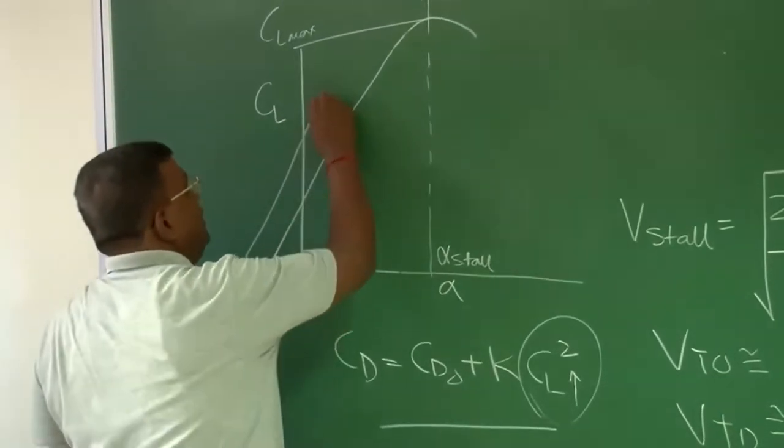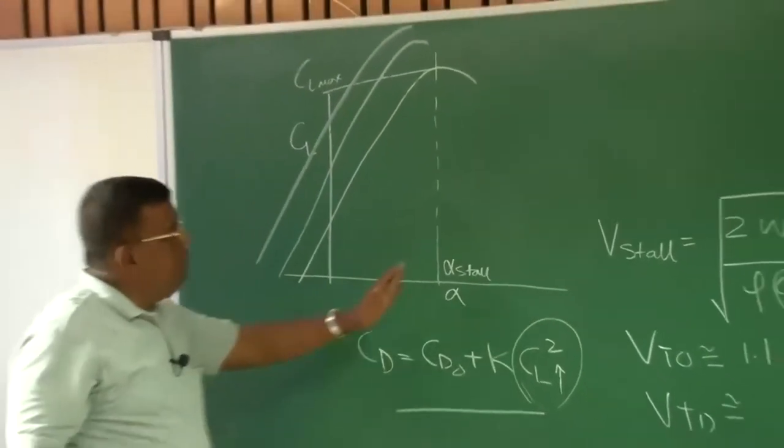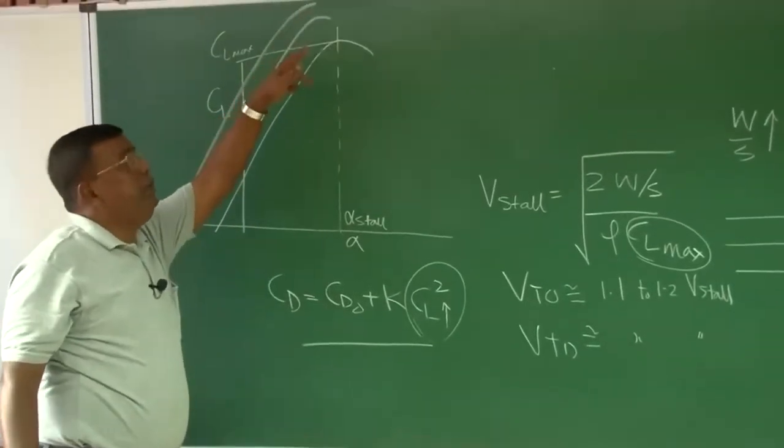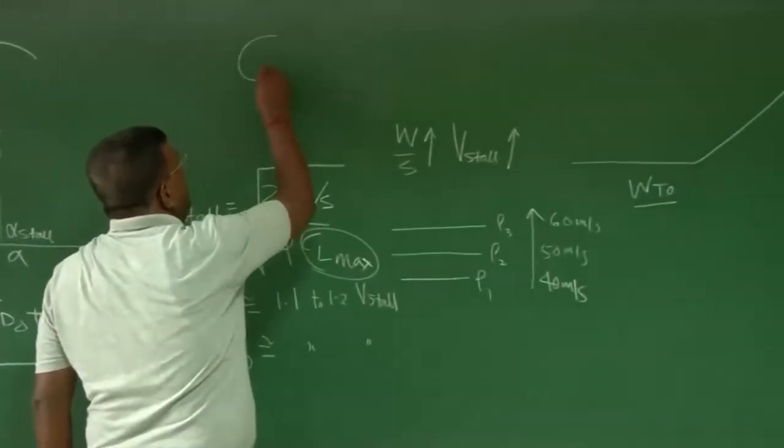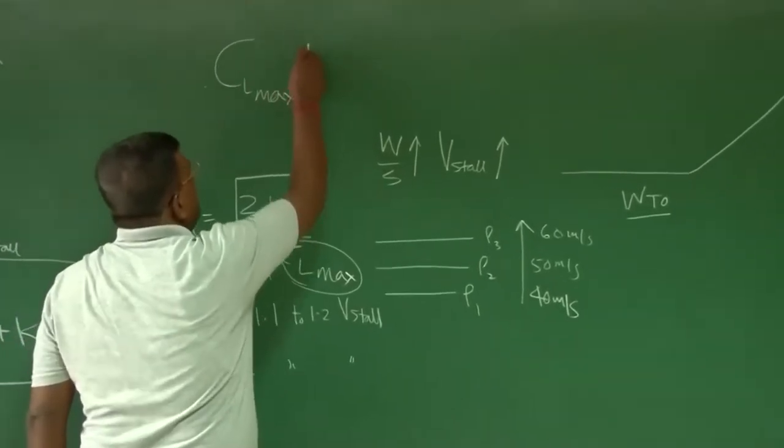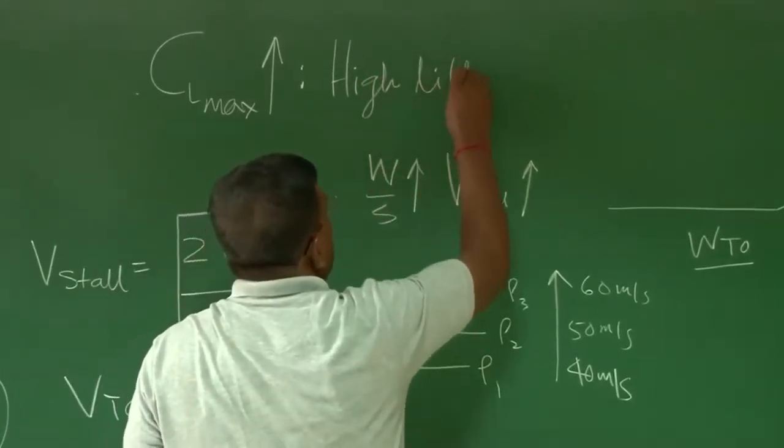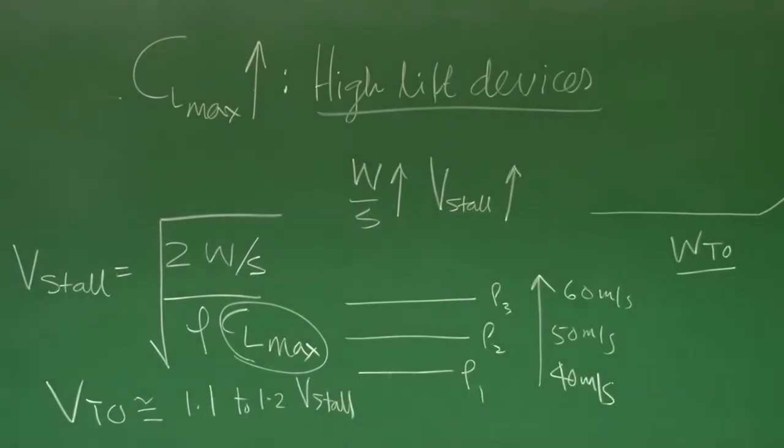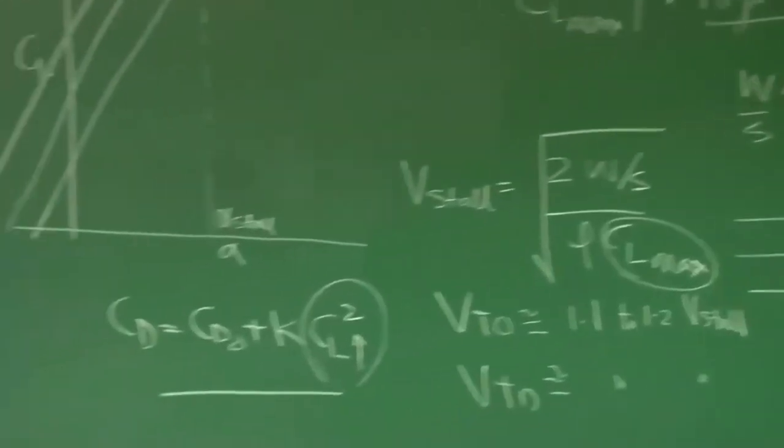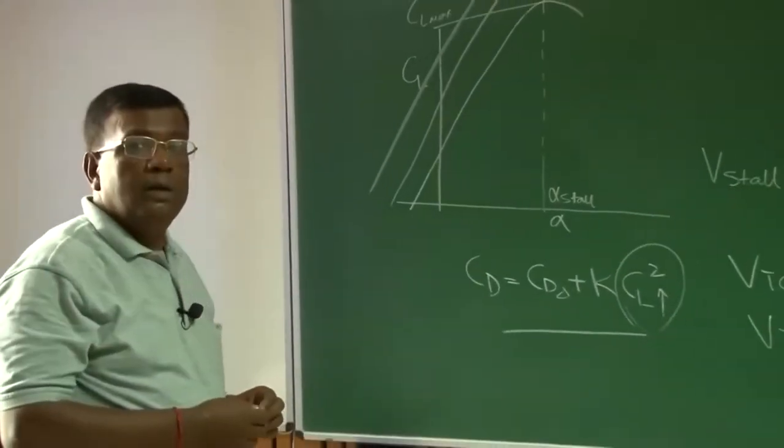The question comes how do I increase this CL max? Graphically, you could see if we could somehow shift this graph something like this. Although alpha stall will reduce, but there is possibility of increasing CL max. And that is where we talk about high lift devices, aim is to increase CL max is high lift devices. In the design course, we will also put lot of understanding on high lift devices, how to select high lift devices, what are the advantages and what are the penalties you are giving for selecting or designing high lift devices will also be considered separately.